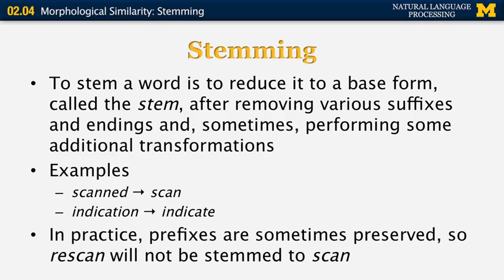Let's look at some examples. We want to convert the past tense 'scanned' into the base form 'scan', and also convert the noun 'indication' into the base form of the verb 'indicate'. This way, if we want to find the similarity between two sentences, we would consider 'scan' and 'scanned' to be more similar than two random words, and 'indicate' and 'indication' again more similar than any other words.